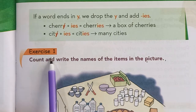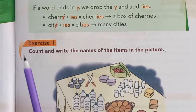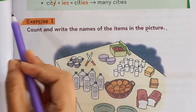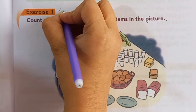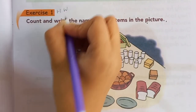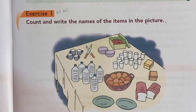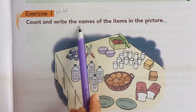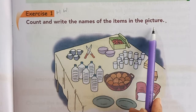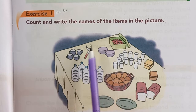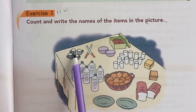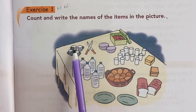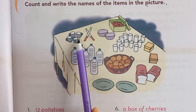Here is exercise 1. This will be your homework. We will discuss it now, but you will do it as homework as well. So let's solve it now. Count and write the names of the items in the picture. So let's look at this picture. There are many items here. You can see 1, 2, 3, 4 — 4 cups.